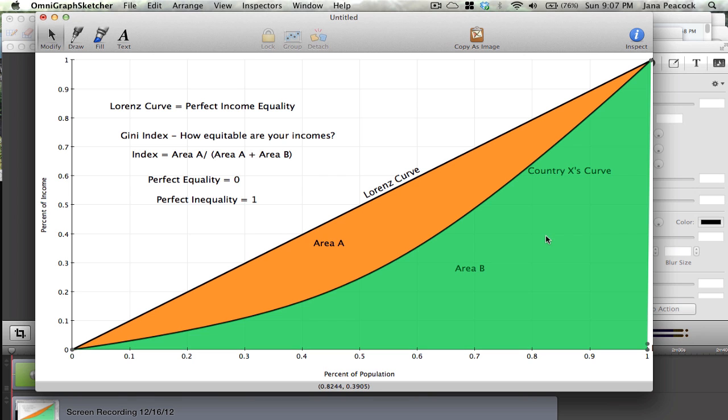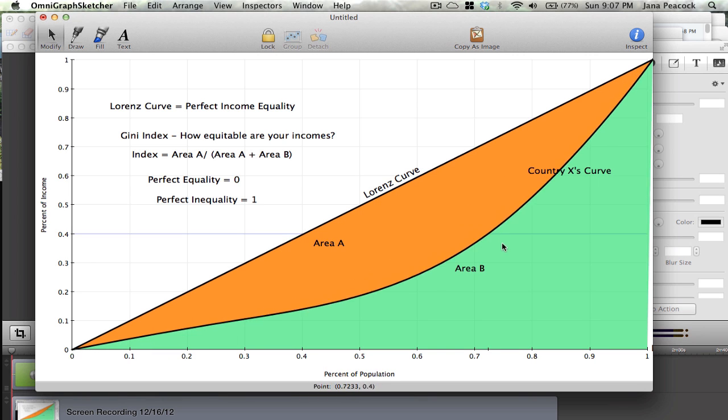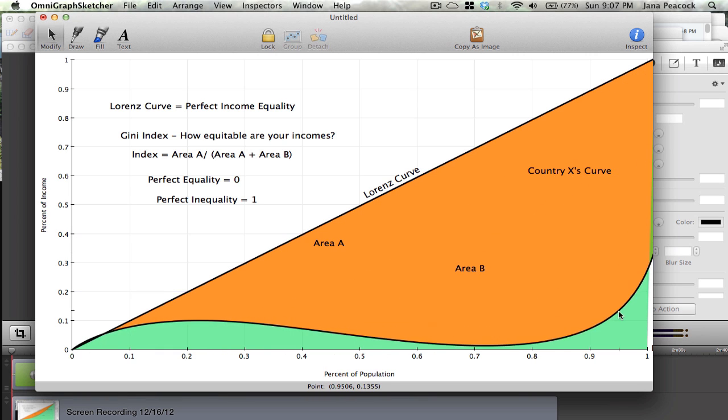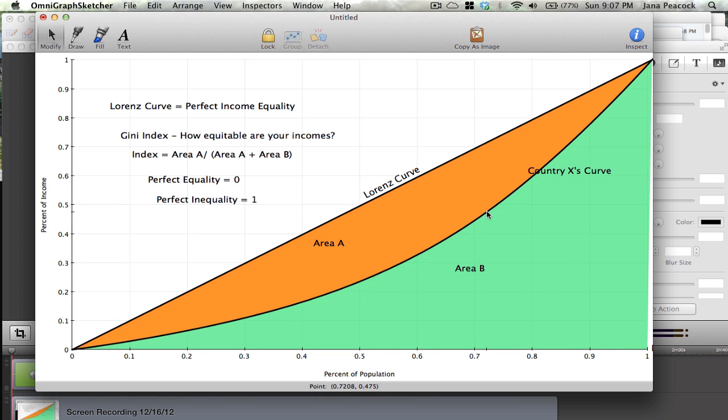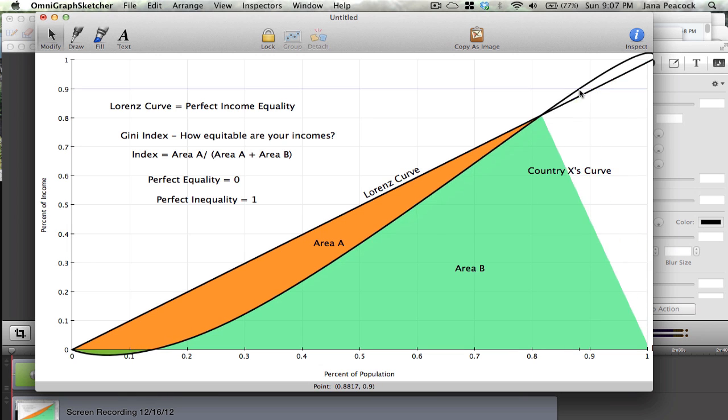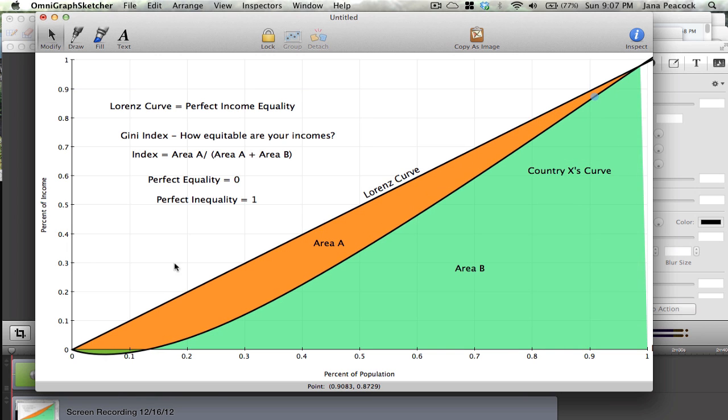However big the piece of area A is, the less equal your country is going to be. So the closer your equation is to perfect inequality, the closer it will be to 1, which means that area A would cover all of this area and be almost equal to the area that it's over. The closer that it is to perfect equality, the smaller this area A is, and your income inequality would be minimized.